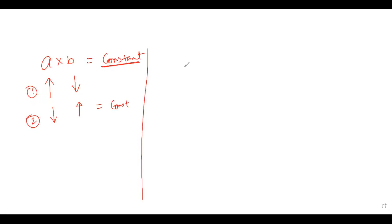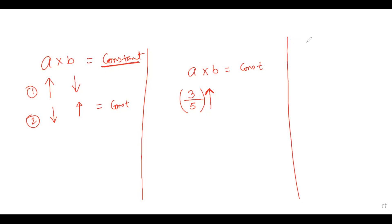Let us understand how much to increase and how much to decrease. Suppose A × B = constant and A is increased by a ratio 3:5. You can convert it into a percentage, but we work with fractional values. For this question, we are given a 50% increment, so the fractional meaning of 50% is 50/100, which is 1/2.